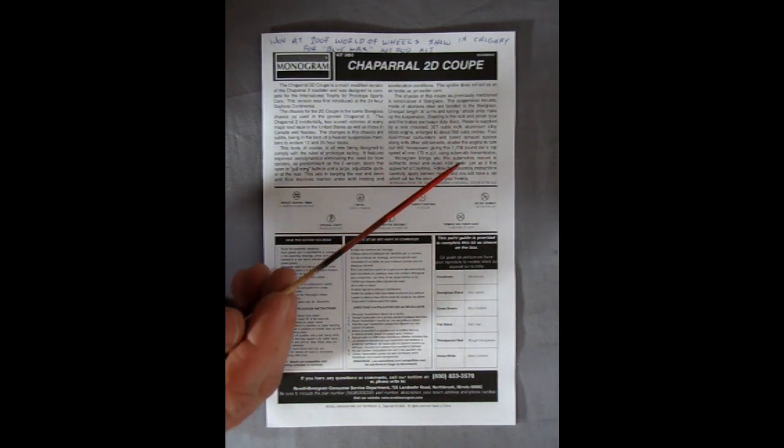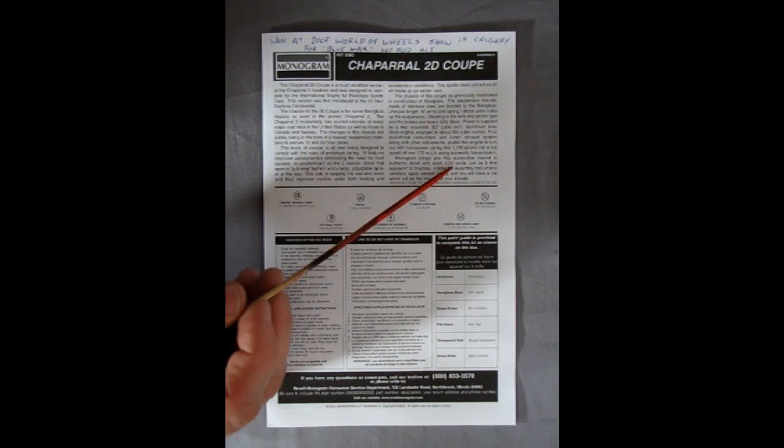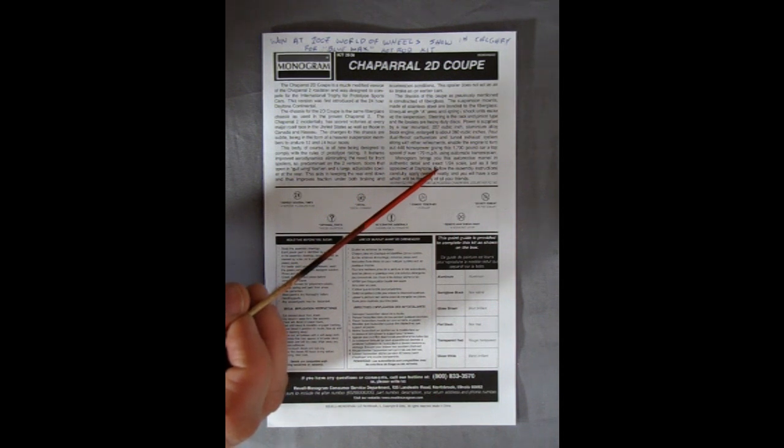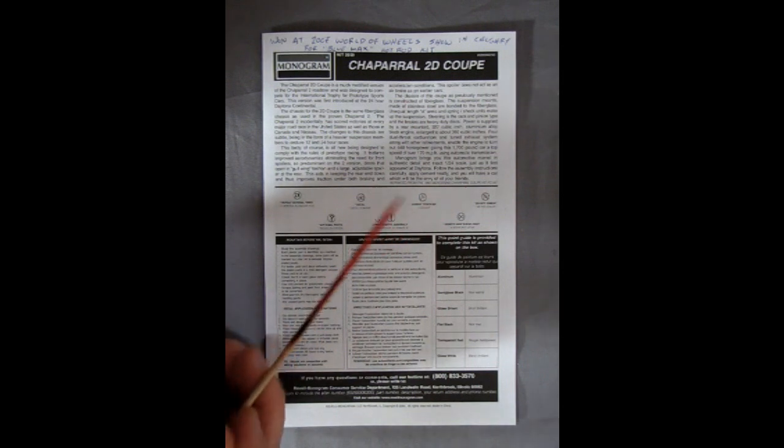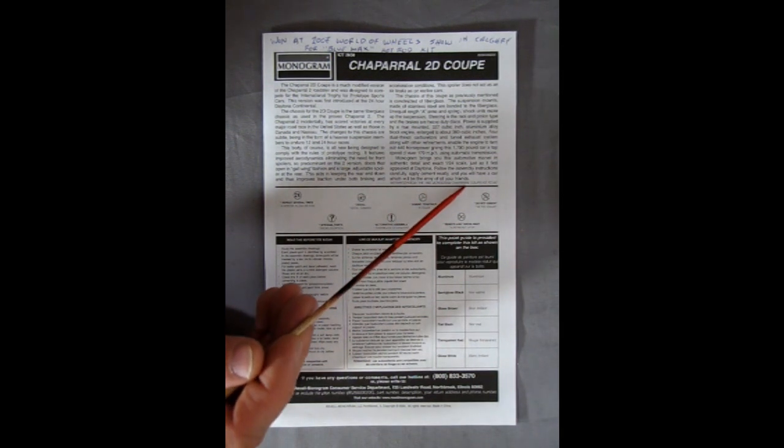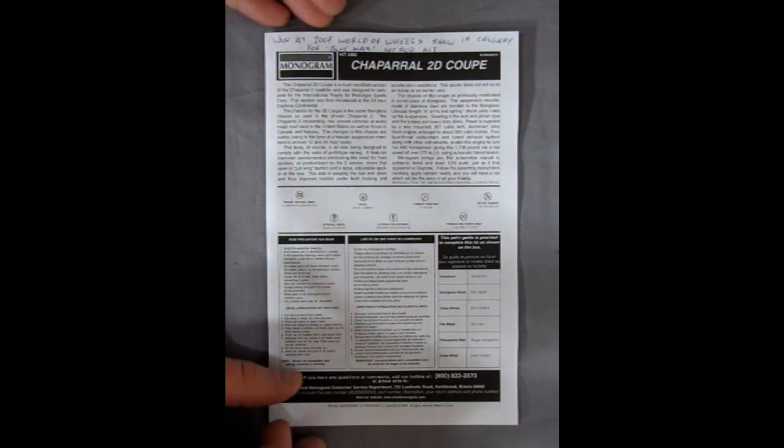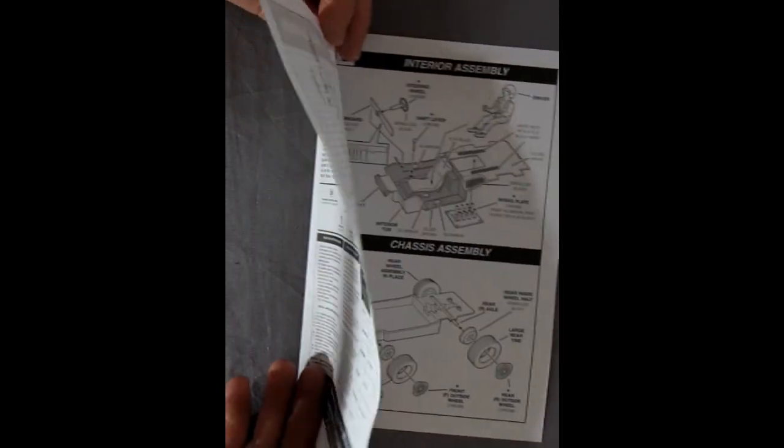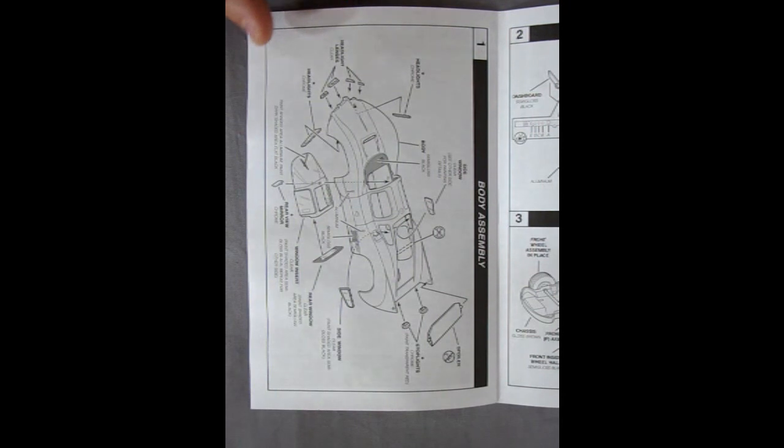Okay, Monogram brings you this automotive marvel in authentic detail, an exact 1:24 scale, just as it first appeared at Daytona. Follow the assembly instructions carefully, apply cement neatly, and you will have a car which will be the envy of all your friends. Reprinted from the 1966 Monogram Chaparral Coupe kit. Okay, so I'm reading that uphill, so if I'm a little bit stuttery, try reading vertically.